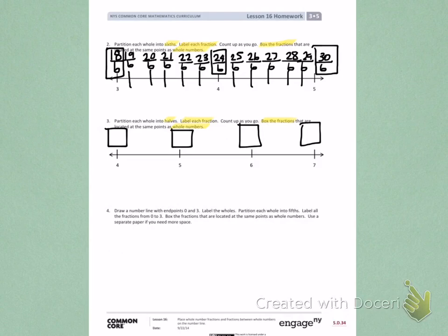Number 4: Draw a number line with endpoints 0 and 3. Label the wholes. Partition each whole into fifths. Label all the fractions from 0 to 3. Box the fractions that are located on the same points as whole numbers. Use a separate sheet of paper if you need more space.